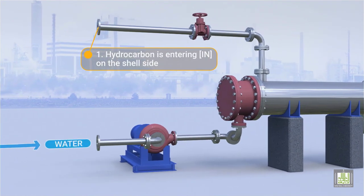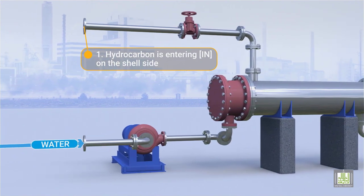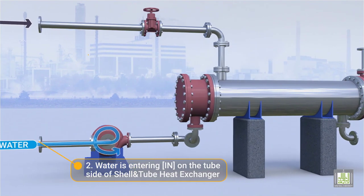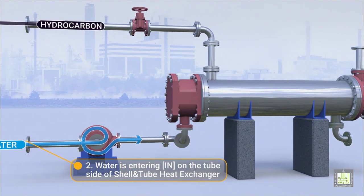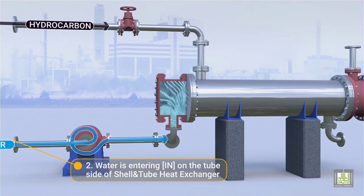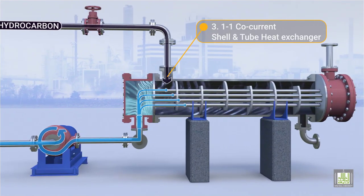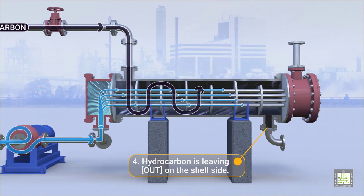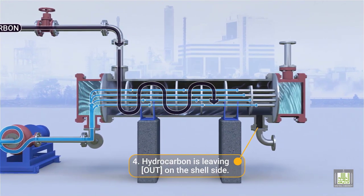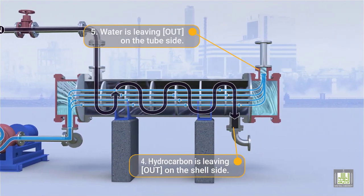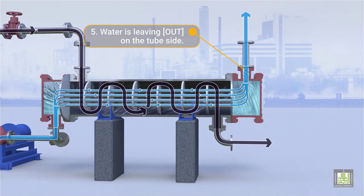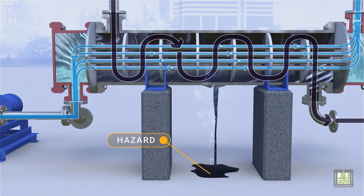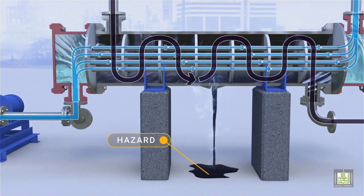Flow pattern: 1. Hydrocarbon is entering on the shell side. 2. Water is entering on the tube side of the shell and tube heat exchanger. 3. This is a 1-to-1 co-current shell and tube heat exchanger. 4. Hydrocarbon is leaving out on the shell side. 5. Water is leaving out on the tube side. The heat exchanger is typically provided with low or high point vents to remove water from the tubes or the shell.